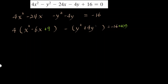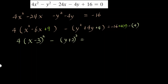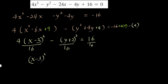For the y-group, half of 4 is 2, square it to get 4. Adding 4 inside the negative-factored group actually adds negative 1 times 4 to the right side. So the equation becomes 4(x minus 3) squared minus (y plus 2) squared equals 16. Dividing all terms by 16 gives (x minus 3) squared over 4, minus (y plus 2) squared over 16, equals 1.